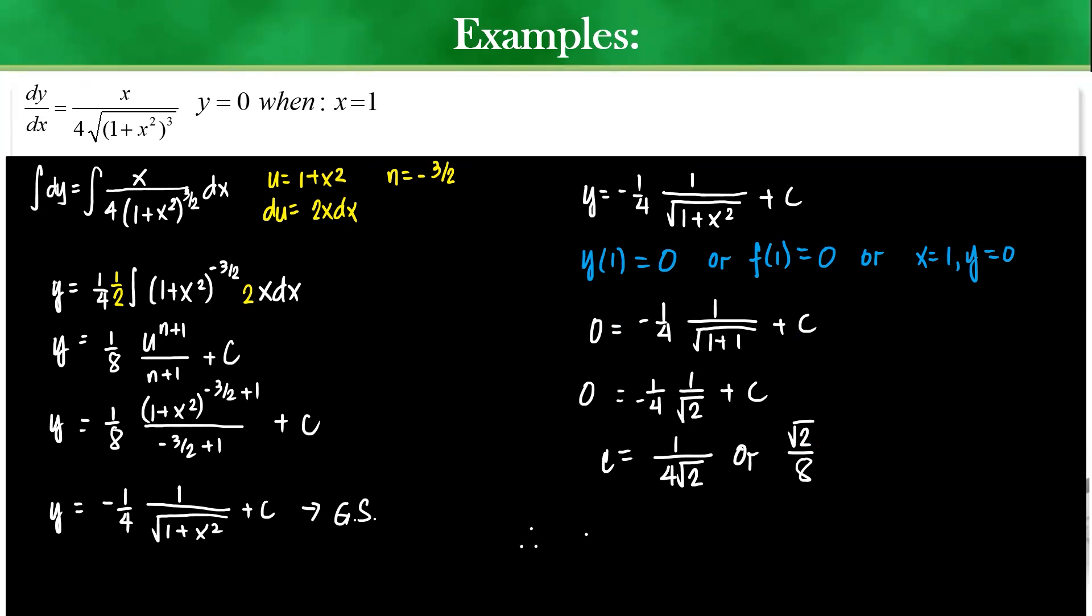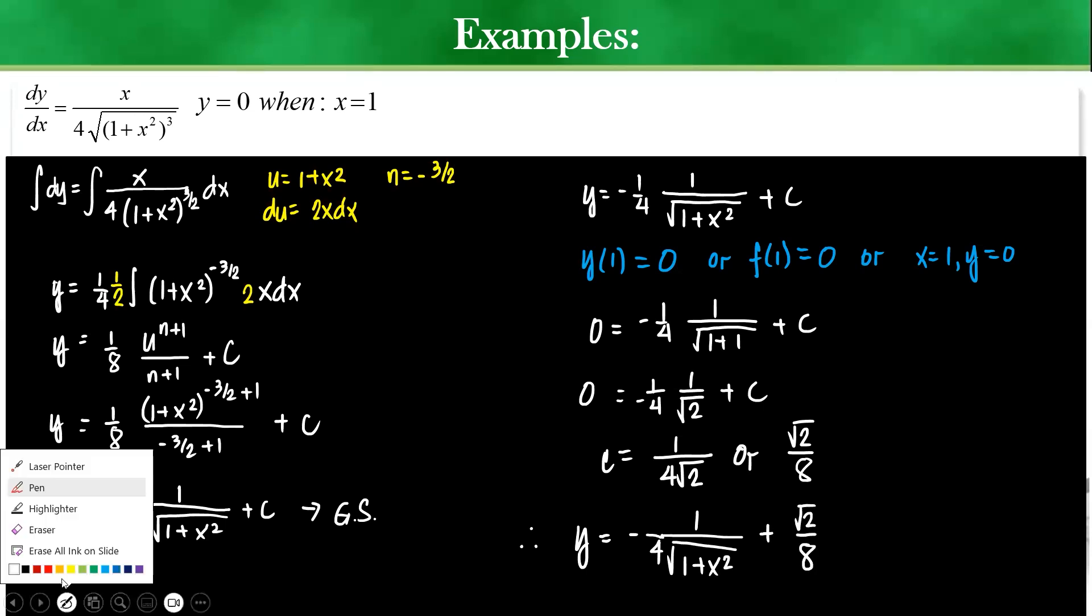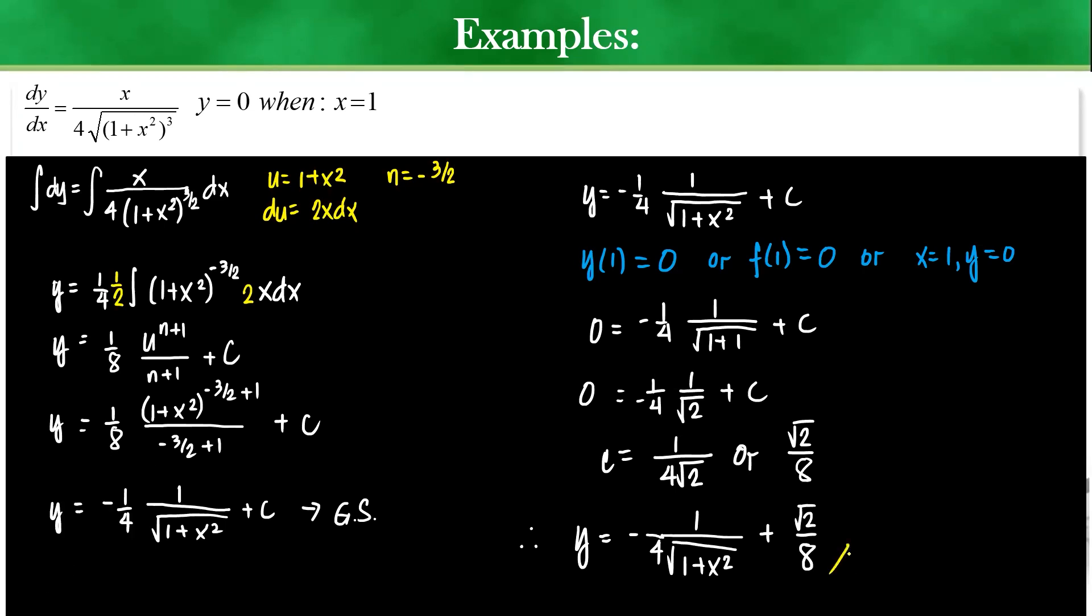So, if I ask what is the particular solution? The particular solution would then be negative 1 over 4 root of 1 plus x squared plus square root of 2 over 8. So, this one is what I call my particular solution. It's particular to the given condition. If I ask you, what's the constant of integration here? This is the constant of integration. Let's try moving to the next.